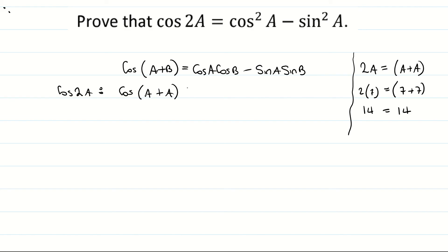And if I look at it now, I'm basically subbing in a for a and a for b into my cos a plus b formula from page 14. So when I sub them in I'm going to go cos a, which is being substituted with an a so that doesn't change.